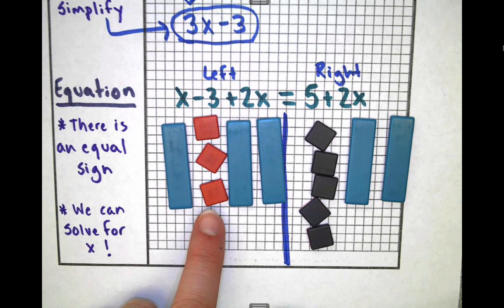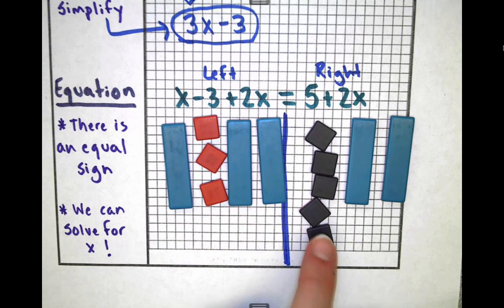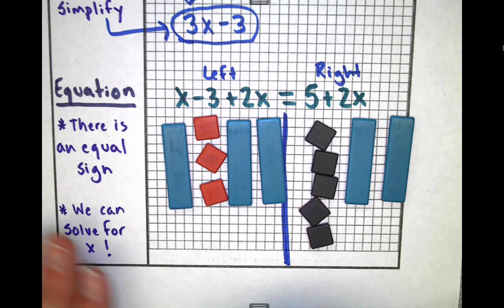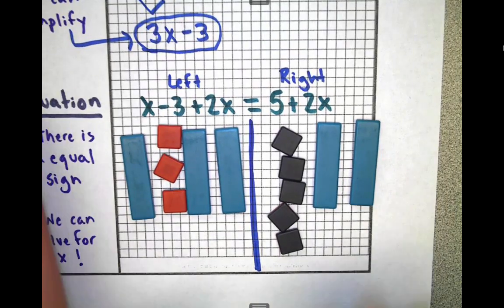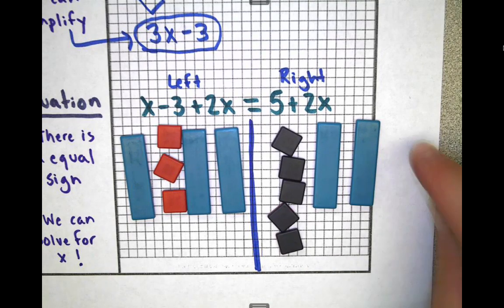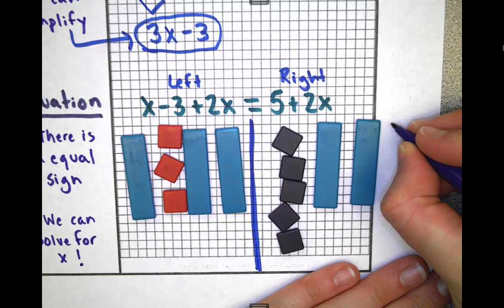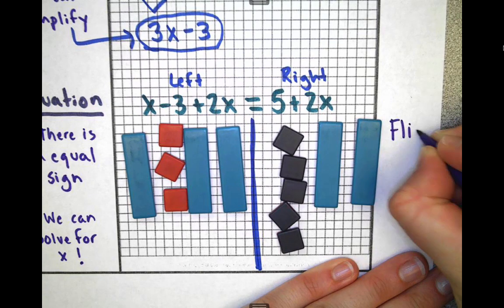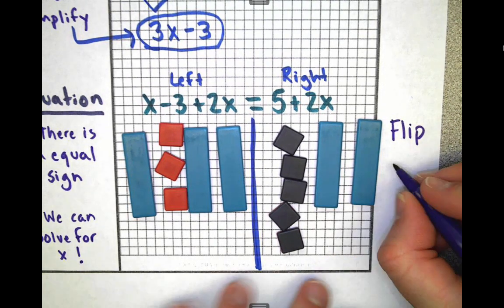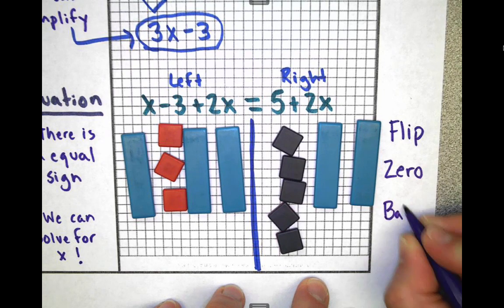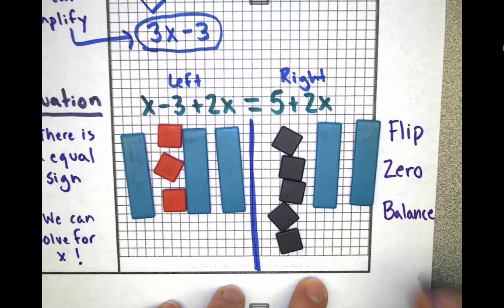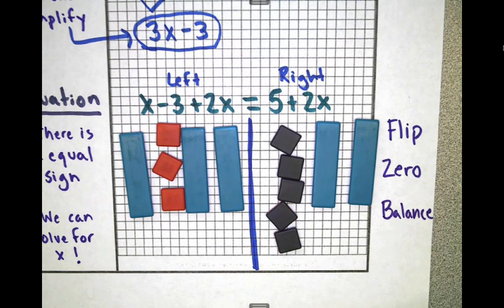x - 3 + 2x = 5 + 2x. We're going to go through what we call our legal moves. There are three legal moves we can use. We learned them in the last video. We can flip, we can zero, or we can balance. Sometimes we do them over and over. We're going to go through the flip, zero, balance process. I'm going to do it once with the tiles and then once by drawing a picture.